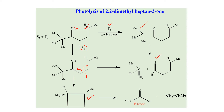The cyclobutane is also unstable, so it also cleaves. One product is the enolic form which is tautomerized to a ketone, and the other is an alkene. So all of this process ends in the formation of a carbonyl compound and an alkene.